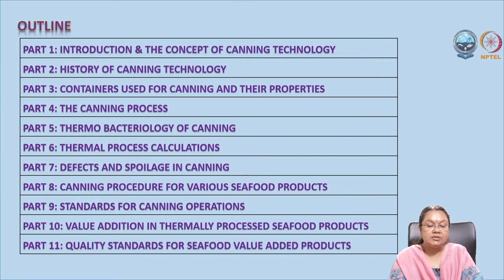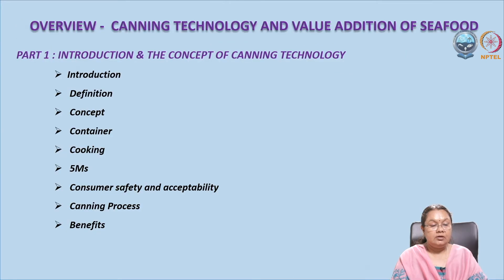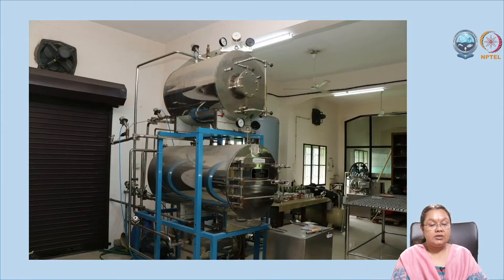In part ten, we will discuss value addition, and in part eleven, we will discuss quality standards of seafood and the associated regulations. Coming to the overview: under the introduction and concept of canning technology, we will cover the definition and concept of canning, the different containers used, the 5Ms, the canning processes, and the advantages of canning over other processing methods. This picture shows a retort, which is used for sterilization.